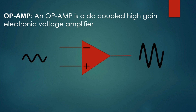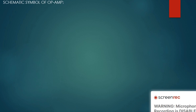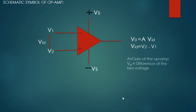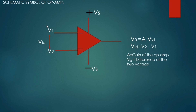If you apply an input voltage to an op-amp, then in the output you will get the same version of the input voltage but with higher amplitude. Here is the schematic symbol of an op-amp, where you can observe that it has two inputs, V1 and V2, and one output V0 equals A times Vid, where A is the gain of the op-amp and Vid is the difference of the two voltages.